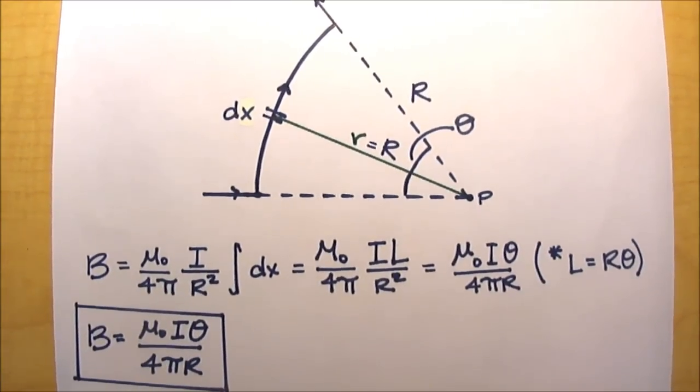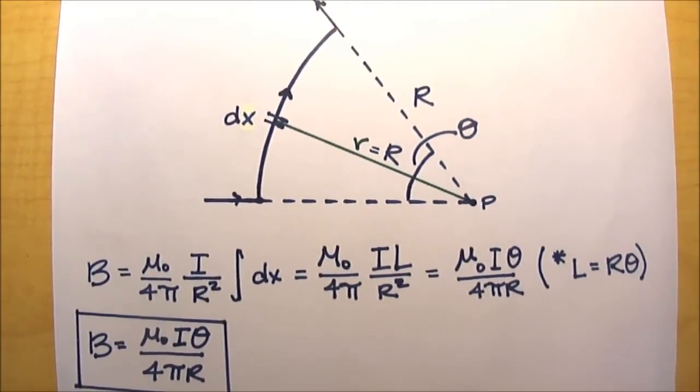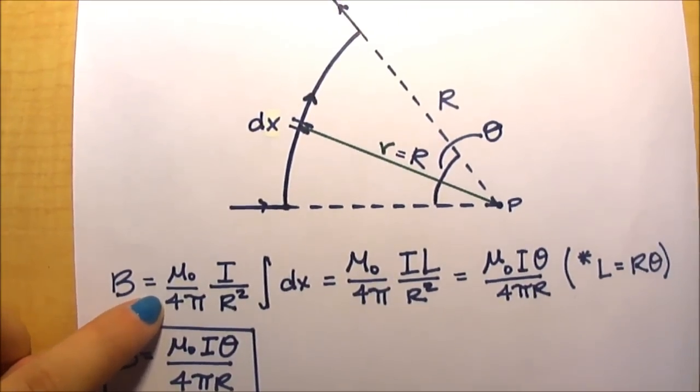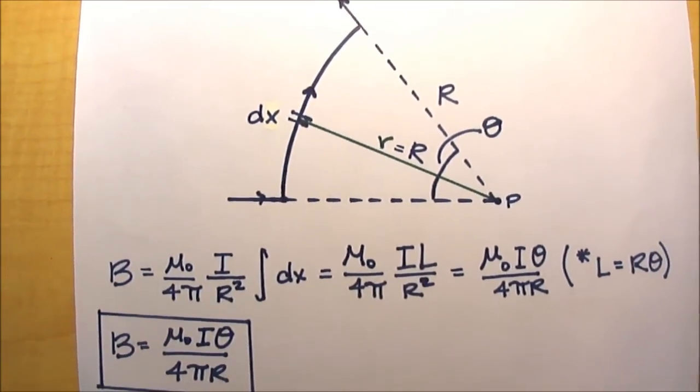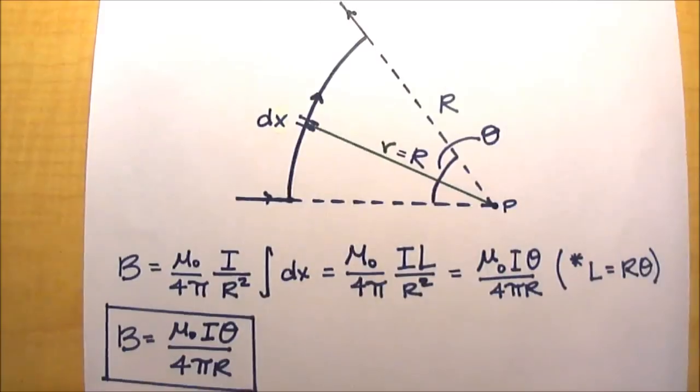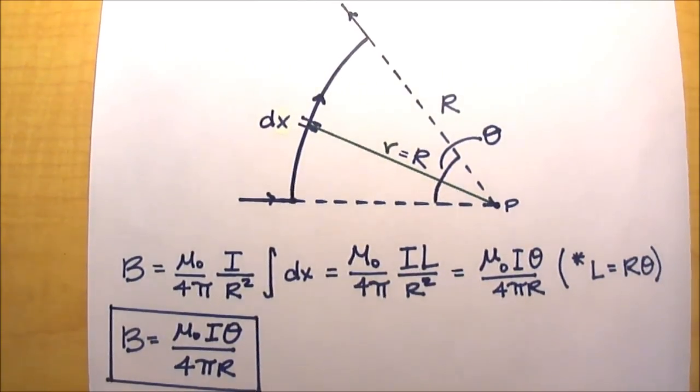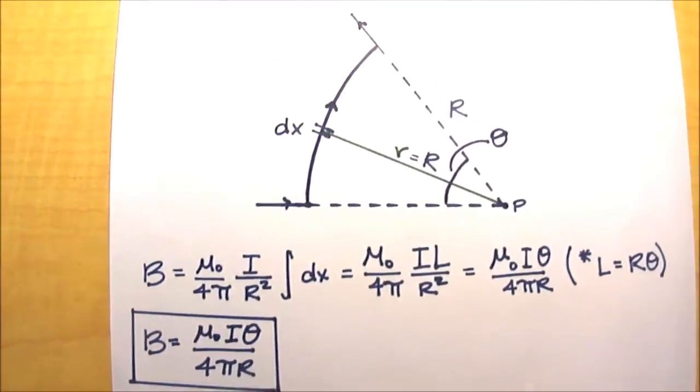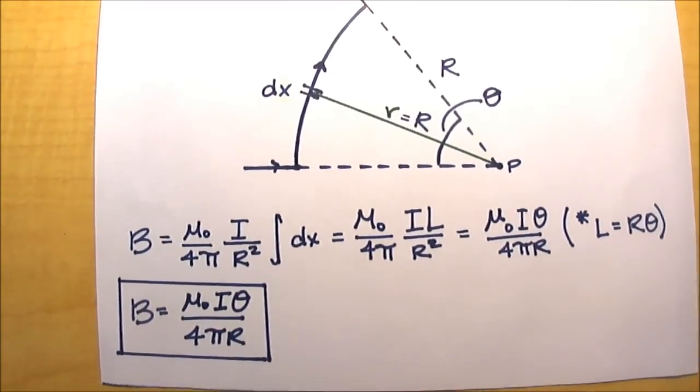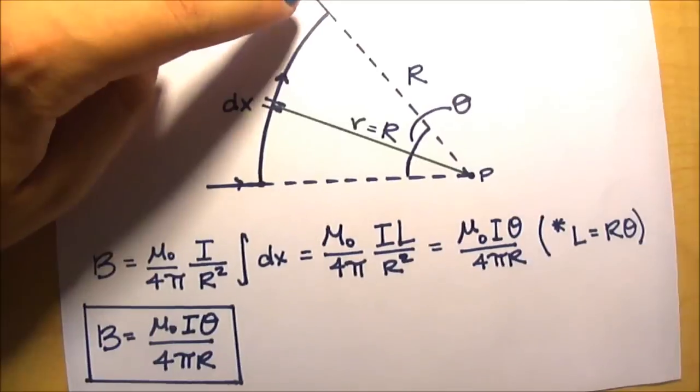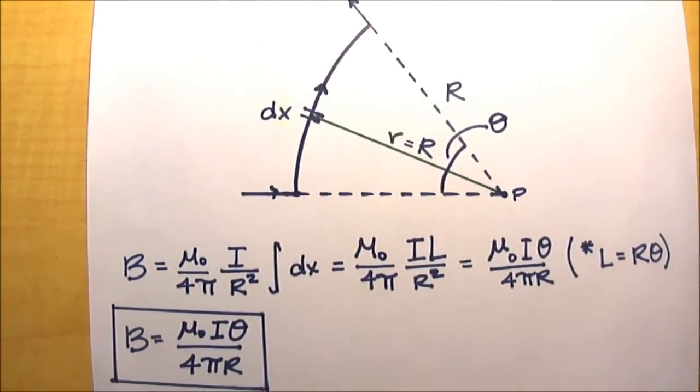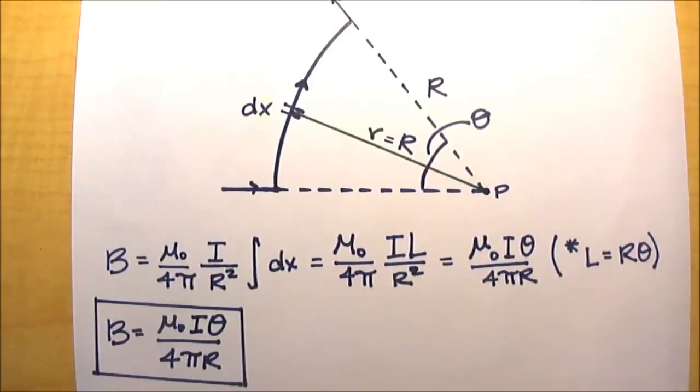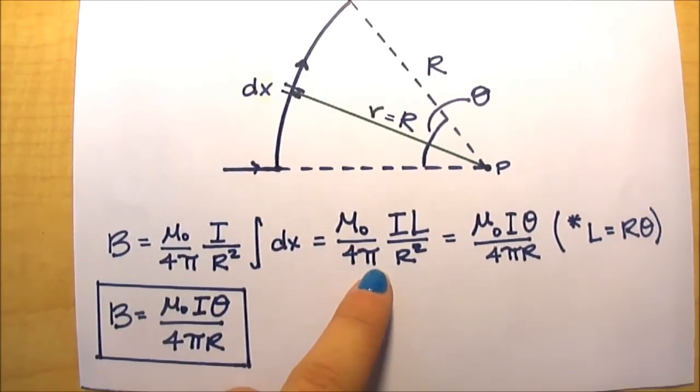Now since everything but the dx or the Δx are constants, it can all be pulled out to the front of the integral. So what we have is this times the integral of dx. Now we weren't given boundaries for this problem, which would just be this point here and this point here. But it turns out we don't really need them, because we know that the integral over this with the boundaries is really just the arc length, which I have here as L. So our final product of this is actually just this.